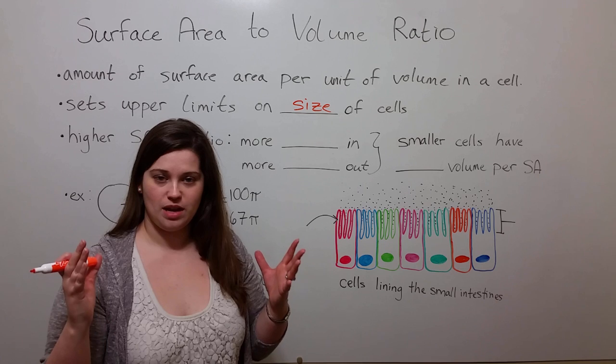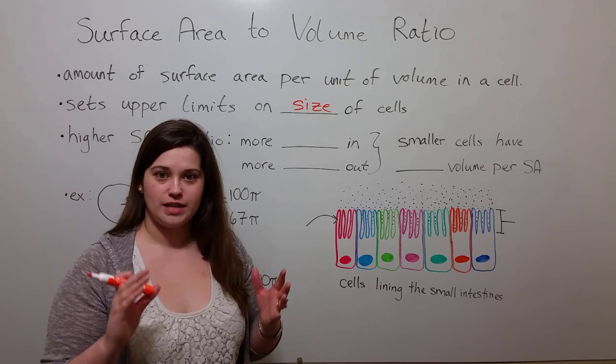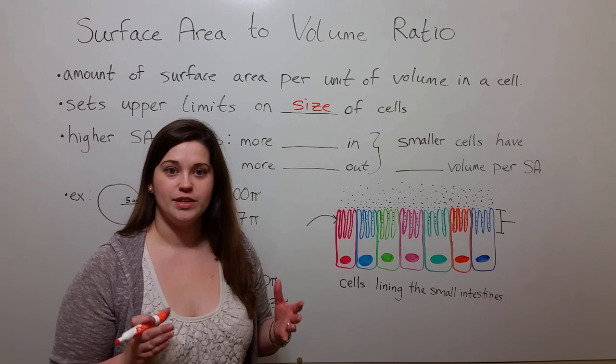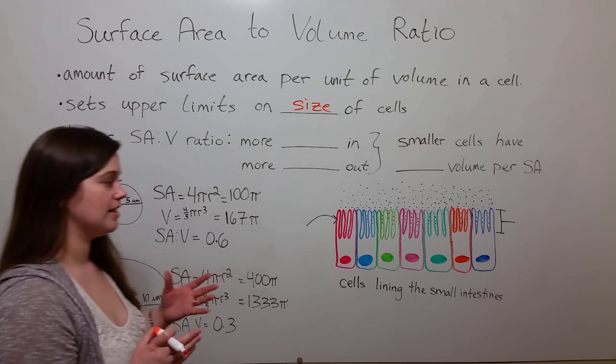So if the volume becomes too large, the surface area becomes too small, the surface area to volume ratio gets smaller, and this is not good for the cell.